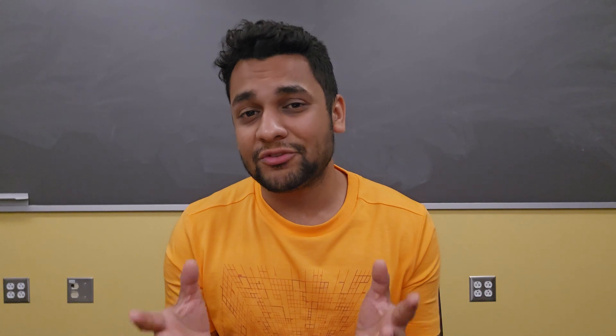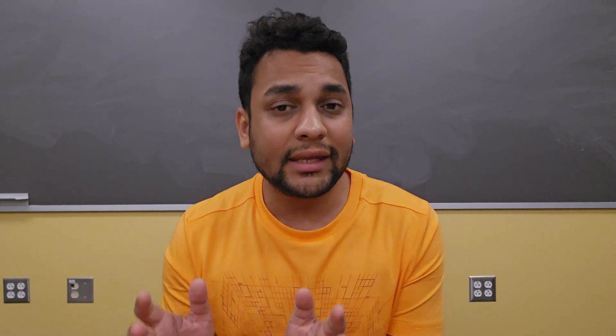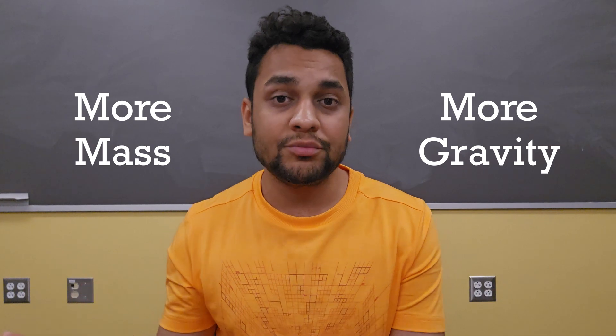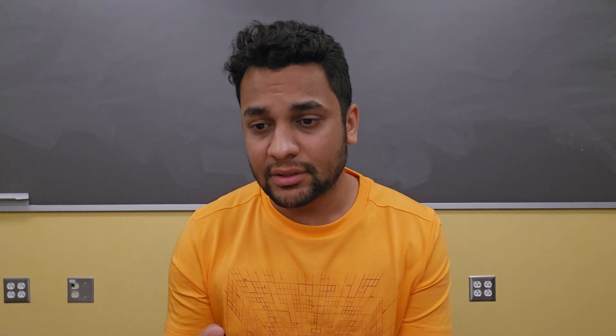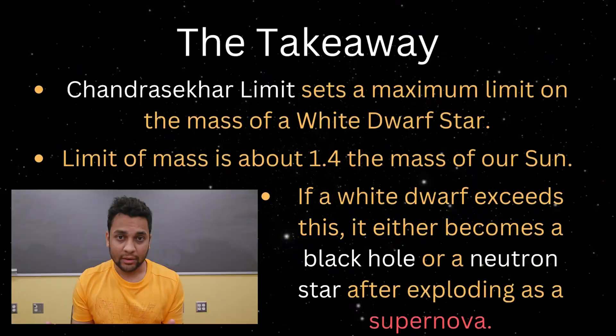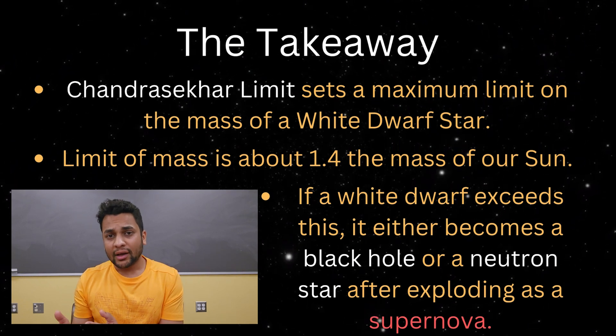We know black holes, neutron stars, and supernovae exist — we even have images of black holes confirming this. You cannot keep on adding mass to an object without limit. More the mass, more its gravity. So at one point in this process of adding mass to that object, its gravity will become so enormous that the object would collapse on itself. This is the crux of the Chandrasekhar limit. Once a white dwarf star surpasses this limit, the star undergoes a catastrophic collapse, leading to a breathtaking explosion known as a supernova. What remains behind after that explosion is either a neutron star or a black hole, depending on the mass left behind.